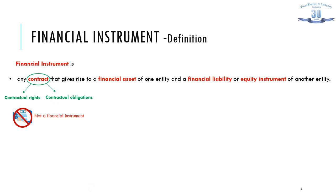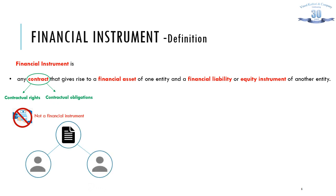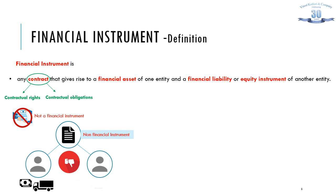Most contracts give rise to a variety of rights and obligations, and those might change as the contract is performed. Some may fall within the definition of a financial instrument and some may not. For example, an unperformed contract for the purchase or sale of a tangible asset usually gives rise to rights and obligations to exchange a physical asset for a financial asset, but these do not represent a financial instrument, because the contractual right to receive cash is not matched with the other party's contractual obligation to pay cash. Once the physical asset is delivered, a debtor or creditor will usually arise, and this will be a financial instrument.